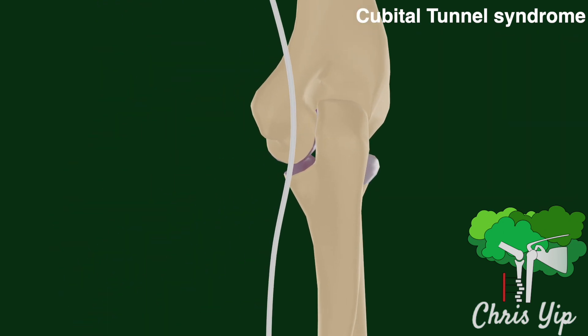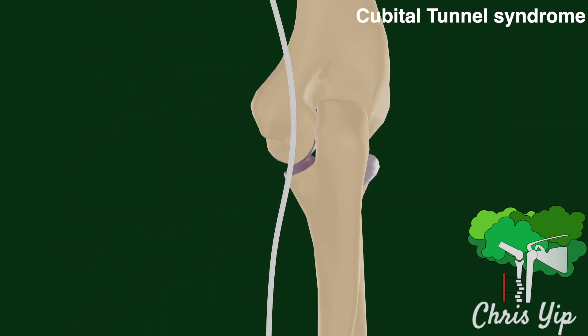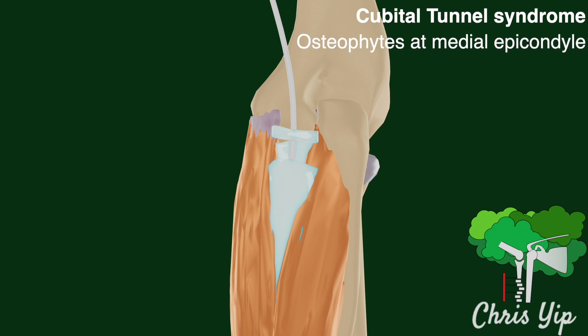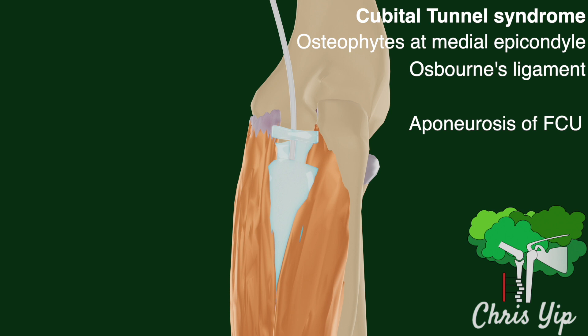Next is the main part of the cubital tunnel. The floor of the cubital tunnel is formed by the medial collateral ligament, the lateral walls are formed by the two heads of the flexor carpi ulnaris, while the roof is formed by the aponeurosis joining the two heads and Osborne's ligament. Here the ulnar nerve can be compressed by osteophytes on the medial epicondyle, or it can be trapped by Osborne's ligament or the aponeurosis.